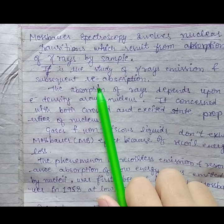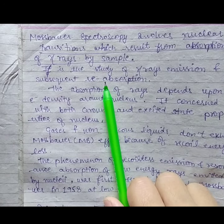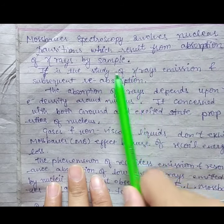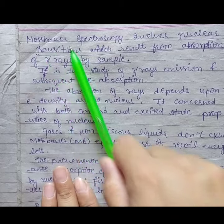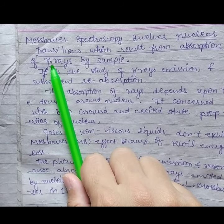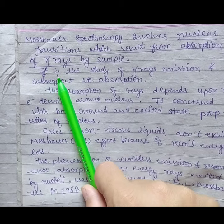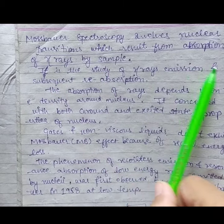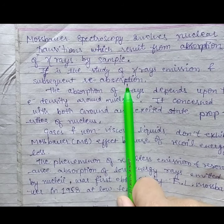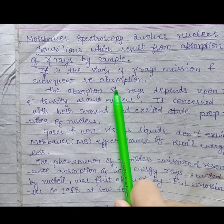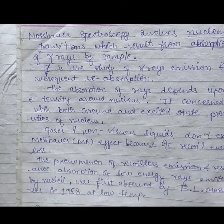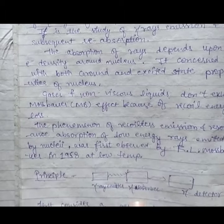Mössbauer spectroscopy is basically the study of gamma ray emission and subsequent reabsorption. Mössbauer spectroscopy is basically the study of gamma ray emission and the process that we have read in Mössbauer spectroscopy.